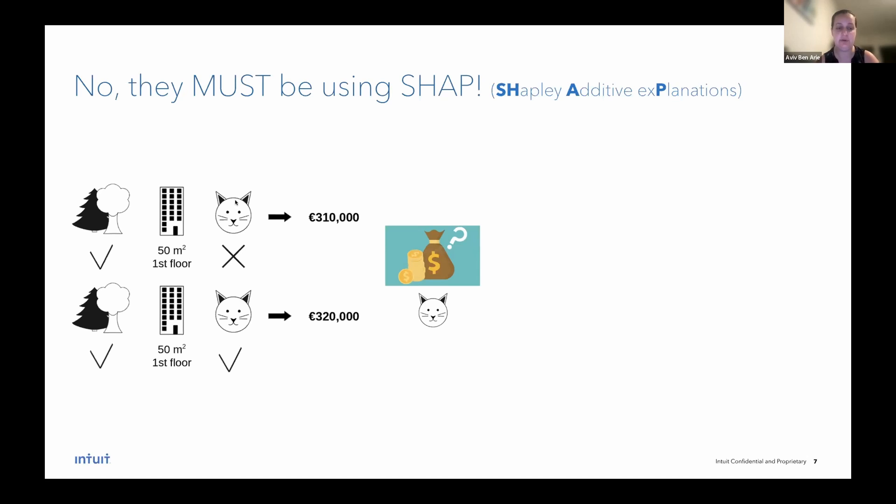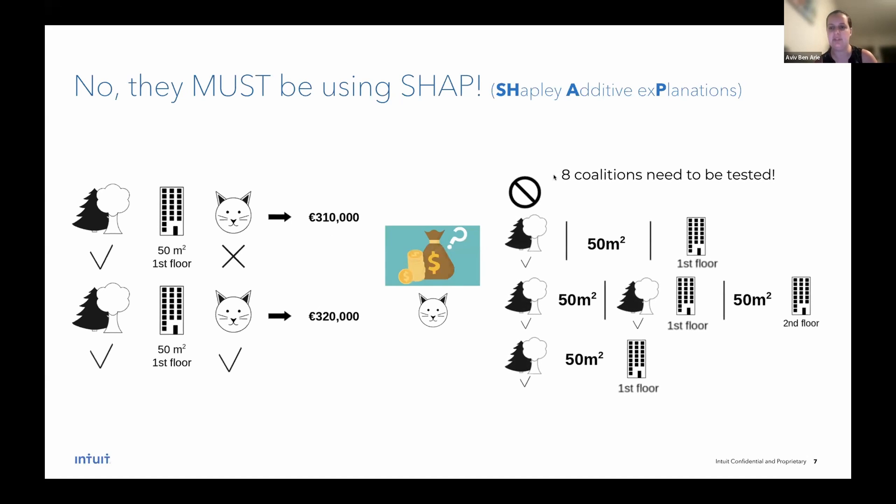The notion that the SHAP is based on is trying to find the marginal contribution of each feature to the final model decision. Let's take a look at it more intuitively. So say we have a model that predicts the price of apartments. And this is based on four features: if the apartment is close to a park, how big the apartment is, which floor it's at, and if the building the apartment is at allows pets or not. So say we have two subsets of features, two inputs. For one, the model predicts the price of 310k, and for the second instance, 320k. So if I would ask you what the marginal contribution of allowing pets is, you would probably just take the delta and say 10k, right? But the theory behind SHAP values or Shapely values claims that we need, that proves that we need to test every single coalition or subset of features and test the marginal contribution of the single feature combined with this subset.